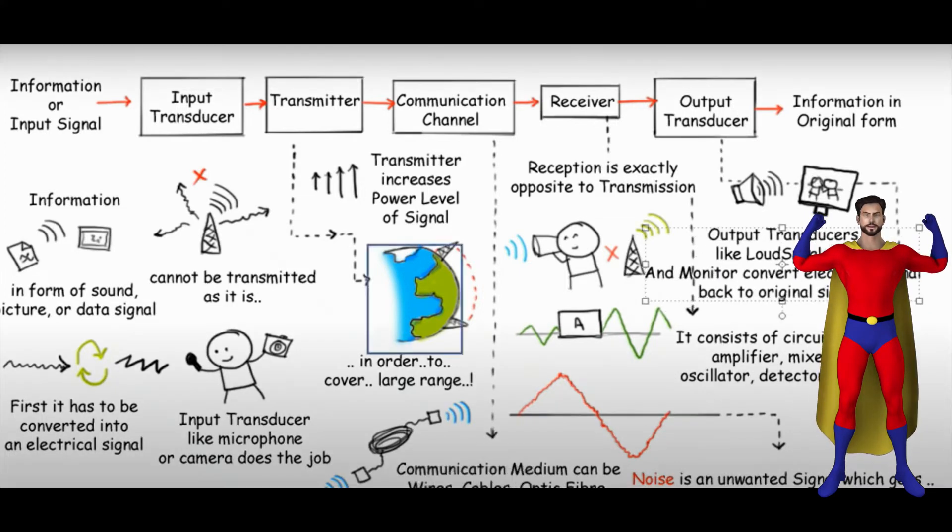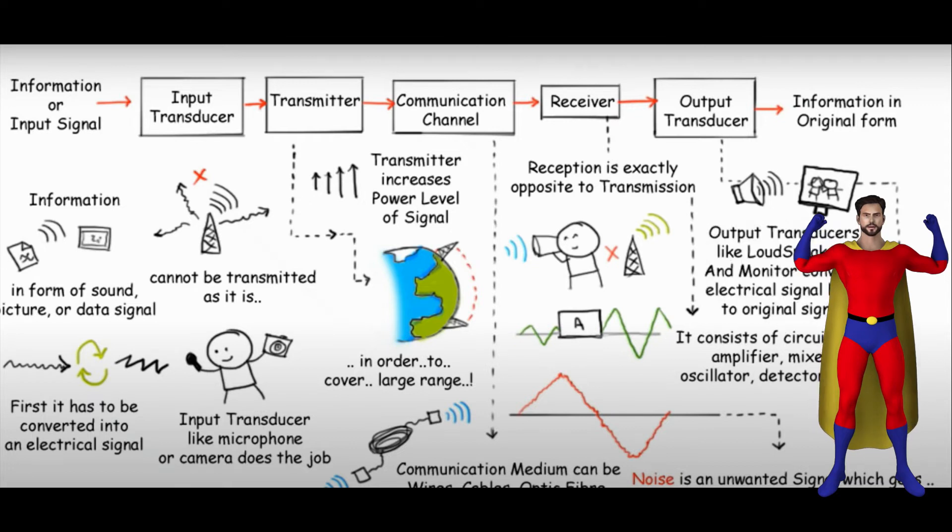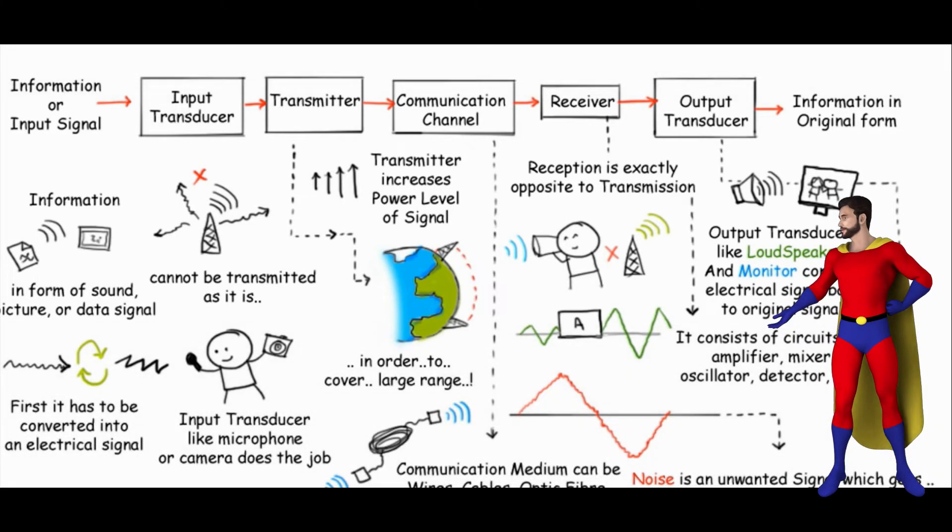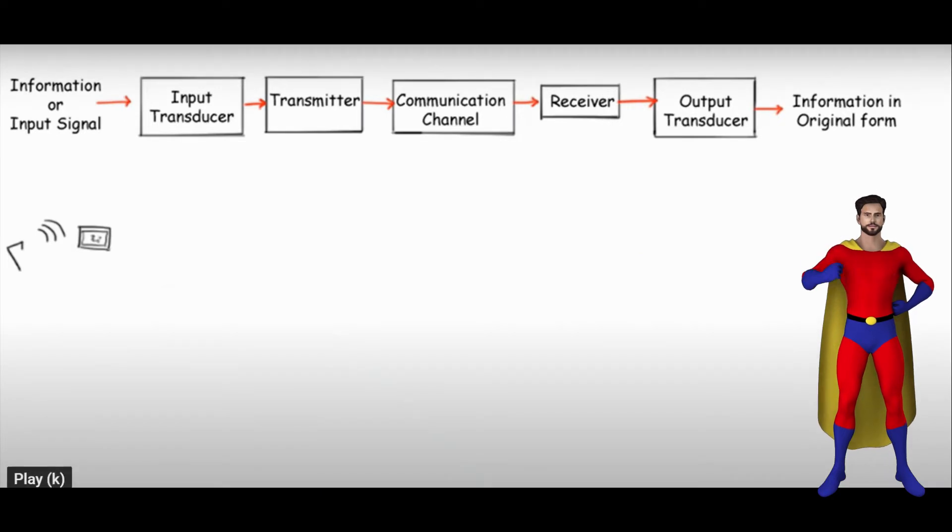More specifically, the covered topics in the course are listed as follows. Lesson 1 Introduction to the Basic Processing Blocks in Digital Transceiver Systems: Source Coding, Channel Coding, Modulation, Pulse Selection, Synchronization, Detection, Demodulation, Decoding, and Equalization.